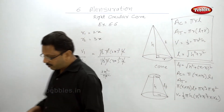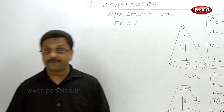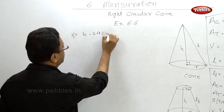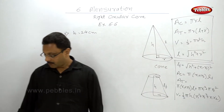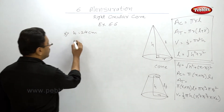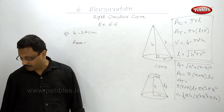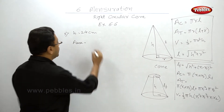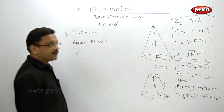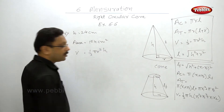The third example: a cone of height 24 centimeters has a plane base with surface area 154 cm². Find its volume. The formula for volume is (1/3)πr²h. In this case, h is given and the area of the base is given.